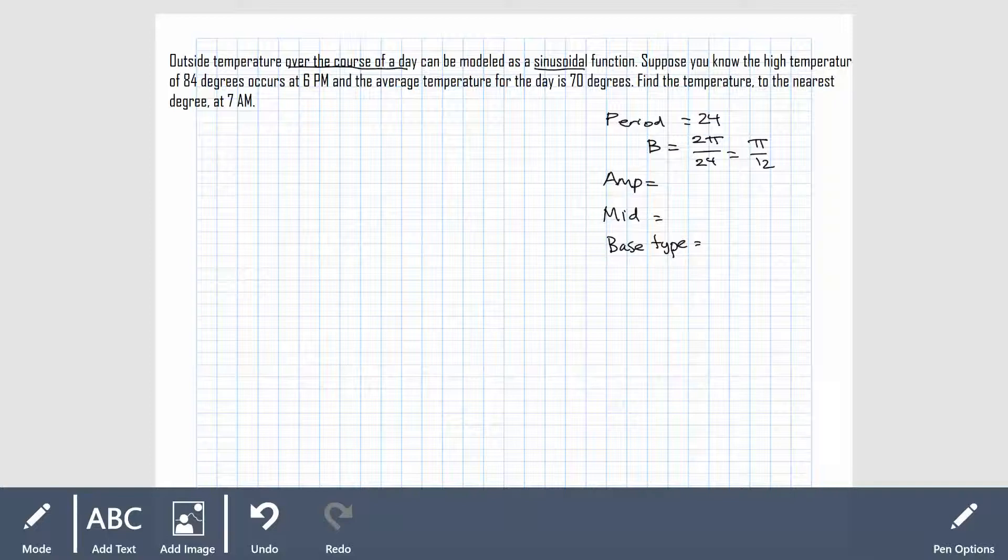In some ways this is an easier problem than the last one. Notice that in this problem they tell us that the average temperature for the day is 70 degrees. So if we're thinking in terms of a picture here, my average is 70 and it's going to be both higher and lower than that 70 degrees. The high temperature starts at 6 p.m. We are at the high temperature of 84 degrees. So this is my high.